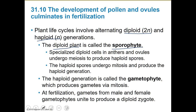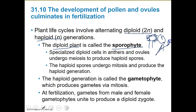Specialized diploid cells in the anthers and the ovules undergo meiosis to produce haploid spores. The sporophyte is essentially the whole plant — the whole tree or flower. All those things are sporophytes because we have diploid cells in the anthers and ovules that produce the spores within those flowers. The haploid spores undergo mitosis to produce the haploid generation. This is where the gametophyte comes into play — the haploid generation called the gametophyte produces gametes via mitosis.